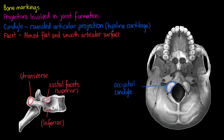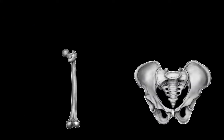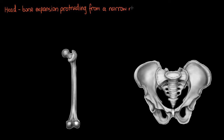We only have two more specific bone markings that are involved in joint formation. The first one is called a head. A bone head is quite easy to remember, as it's always going to be a fairly large protuberance of bone that sits on a narrow neck — a bone expansion protruding from a narrow neck. Looking at the femur here, we can see the femoral head sitting on a narrow neck just below it.